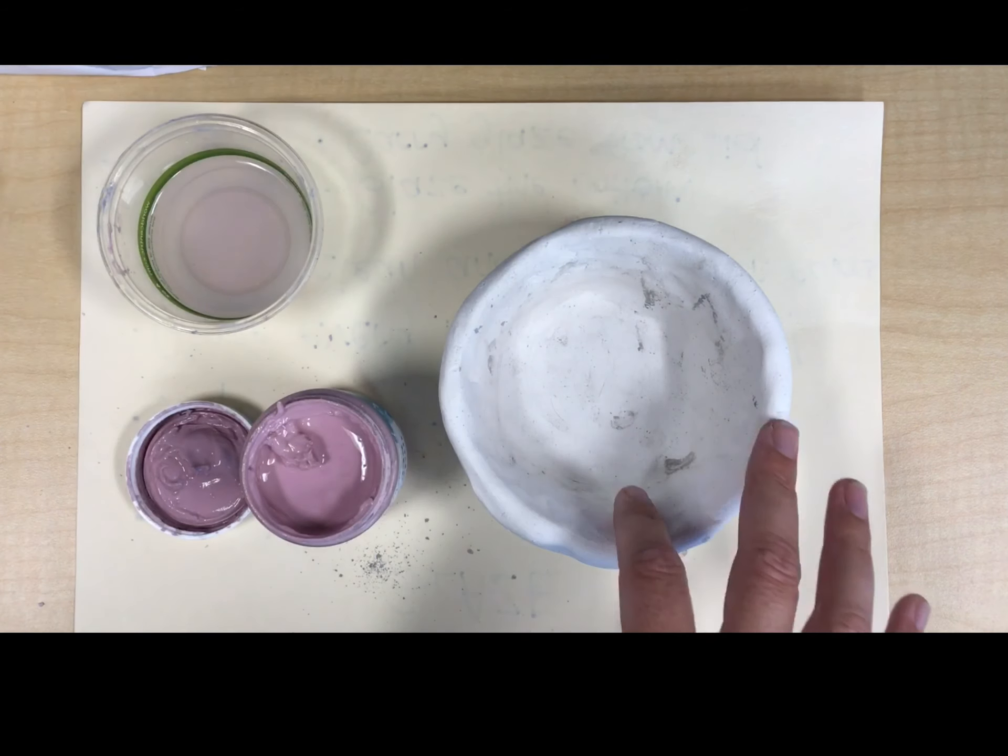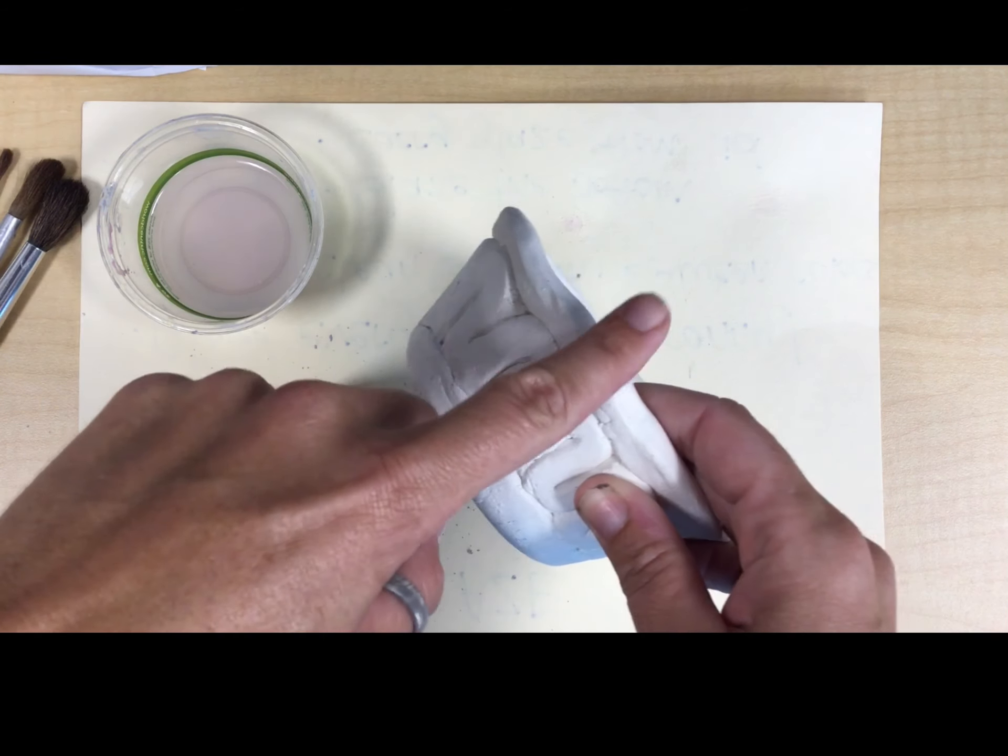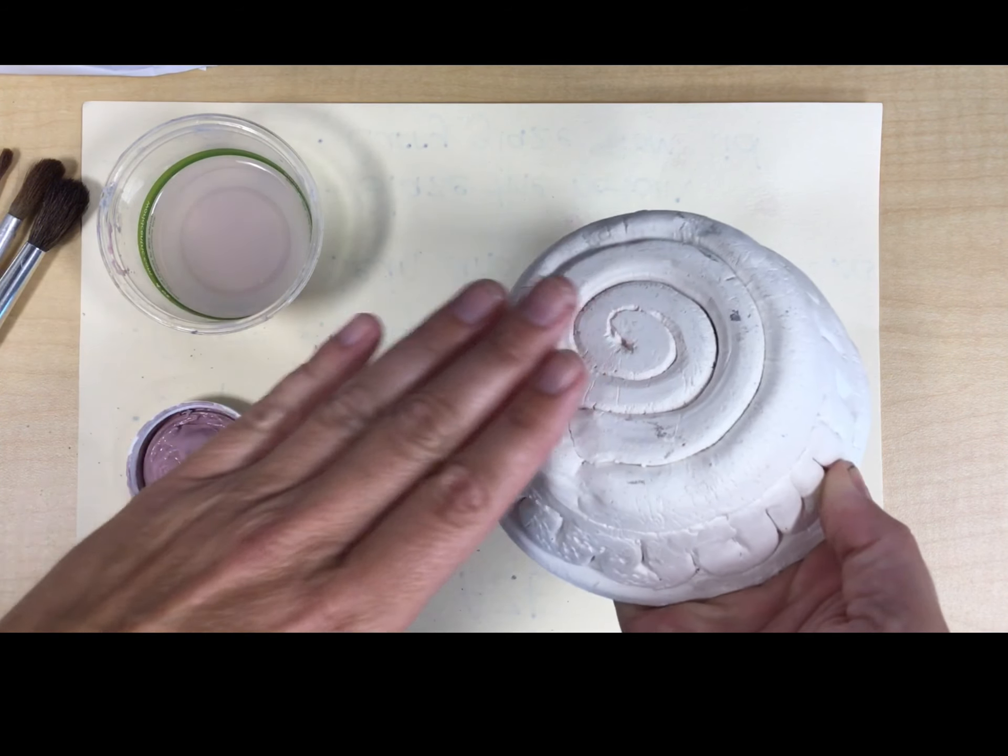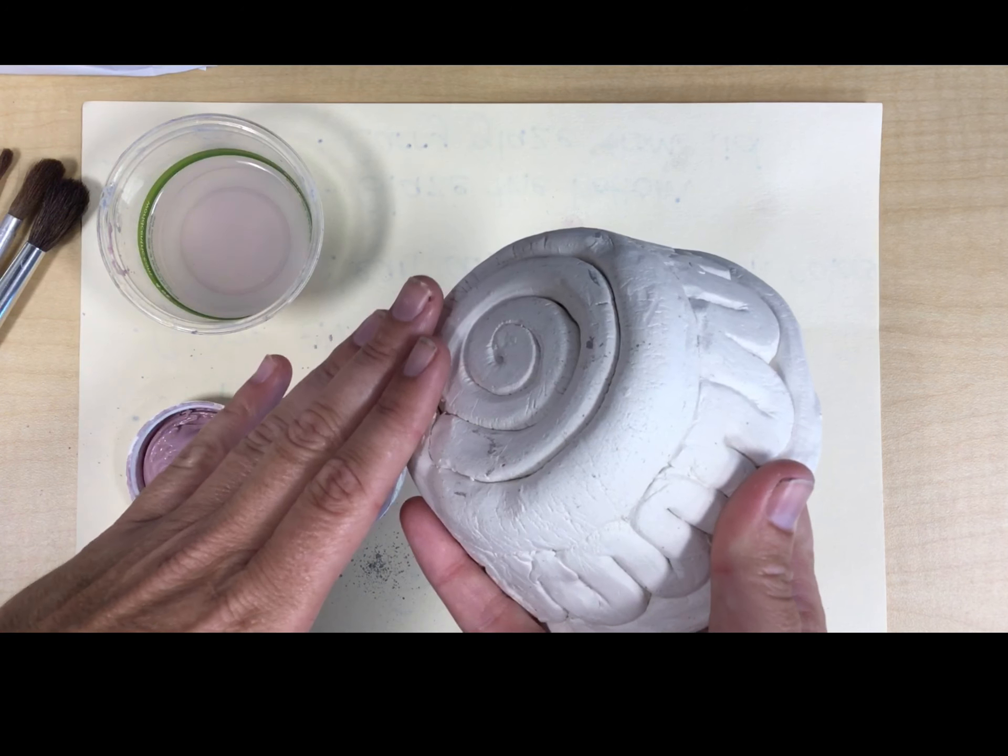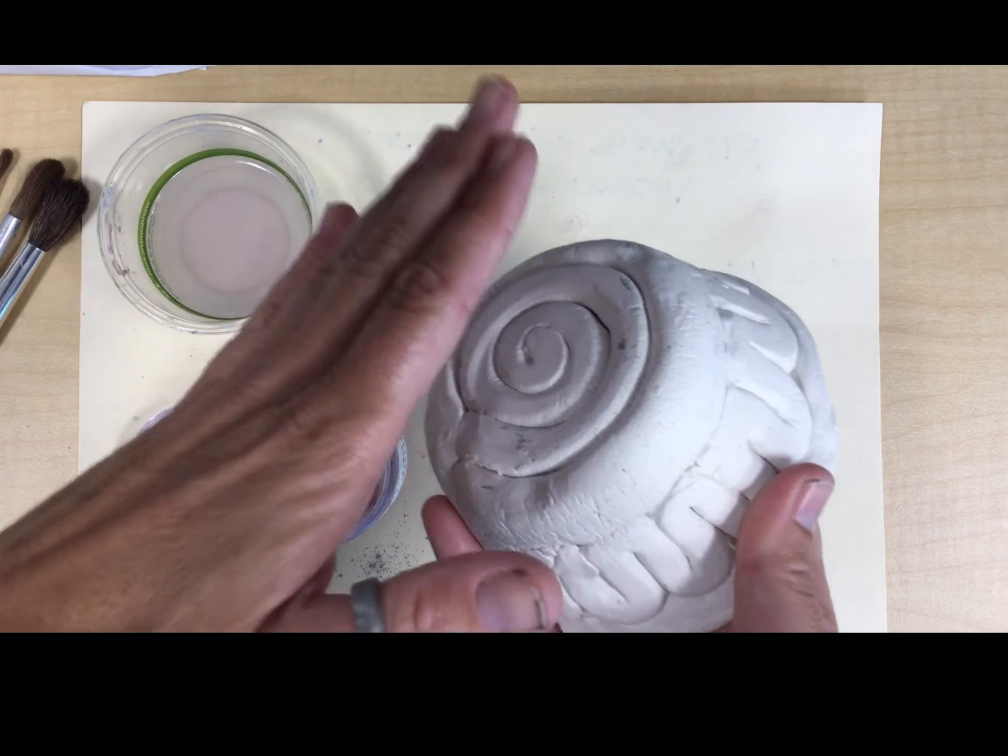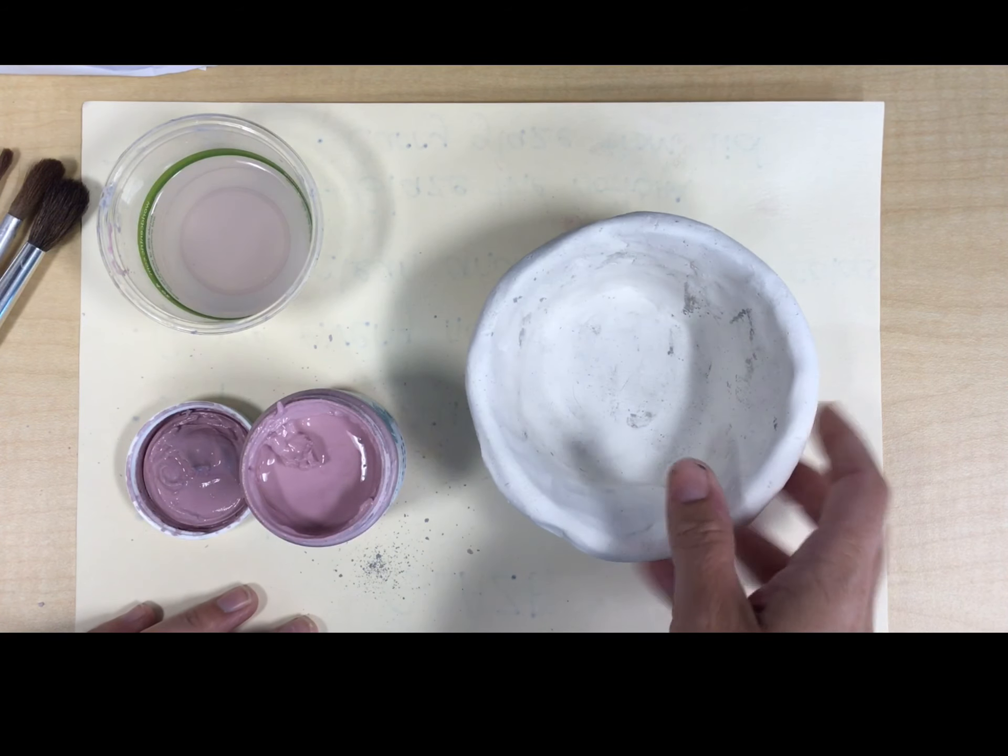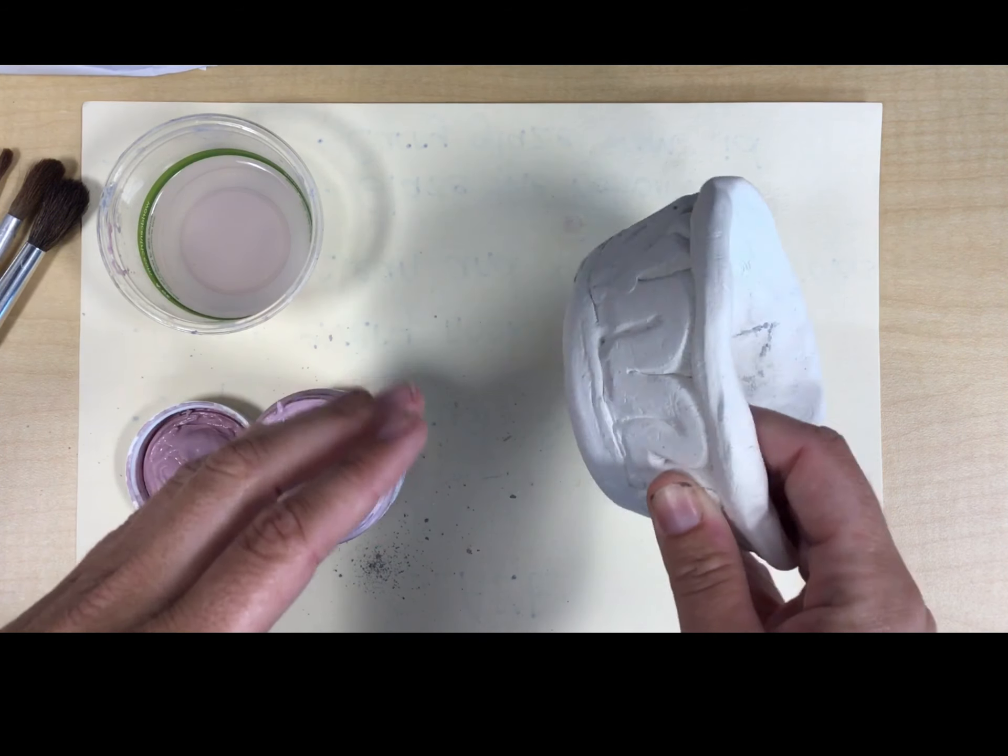So boys and girls, when we start glazing, we're actually going to be glazing from the bottom of our vessel towards the top. But we are not glazing the bottom bottom. The reason why is because remember that the glaze is like glass. And so if there's molten hot glass here, it gets stuck to the shelf below it. So we are not glazing the bottom of our vessels. It's very, very important.